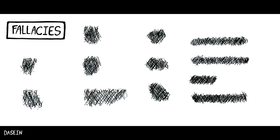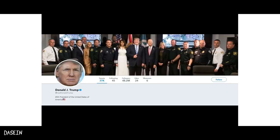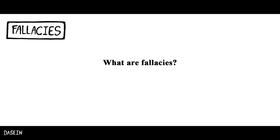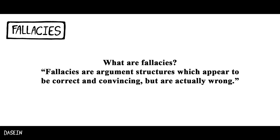Initially, I didn't want to use any political material. My aim is to provide you with the appropriate tools to be able to spot logical fallacies in any argument. But it just so happens that Trump's Twitter feed is an endless stream of fallacies. Fallacies are argument structures which appear to be correct and convincing but are actually wrong. We will use Trump's tweets as examples of such flawed argument structures. Let's begin.